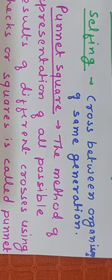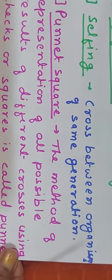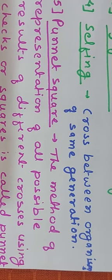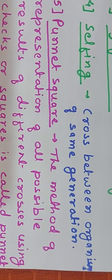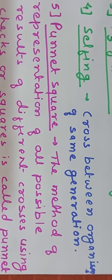After selfing comes the Punnett square. The Punnett square is a method of representing all possible results of different crosses using a grid or square, and is called the Punnett square. It is named after its discoverer, Reginald Punnett, who devised this approach. It helps in the calculation of genotypic and phenotypic ratios of different generations such as F2 and F3. In this method, all the gametes of male and female parents are shown at right angles to each other.